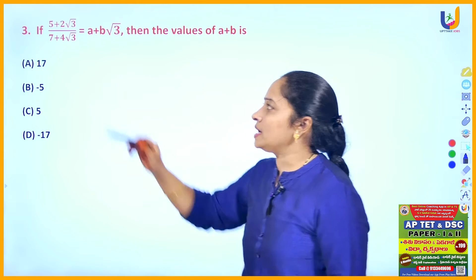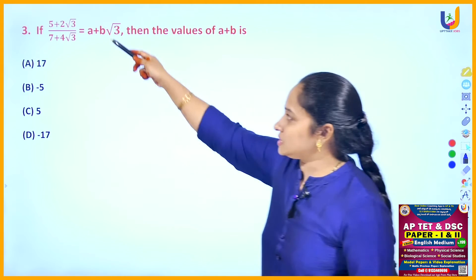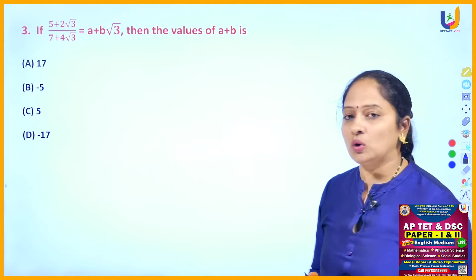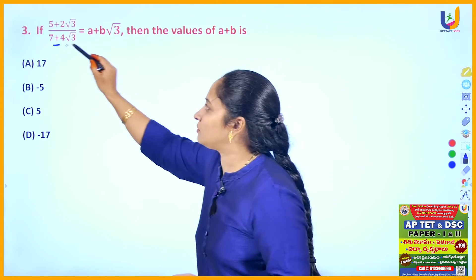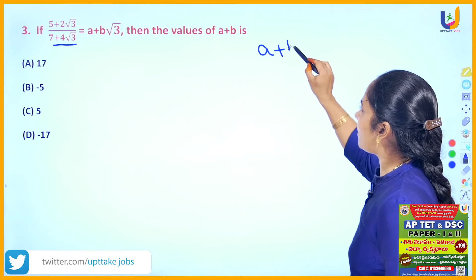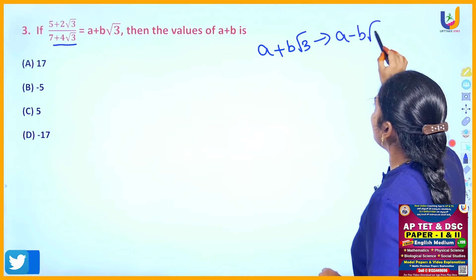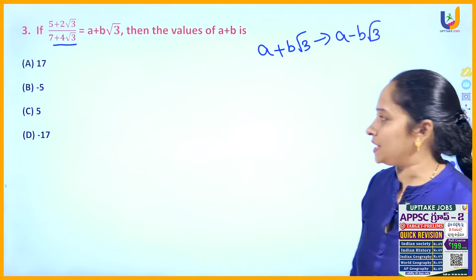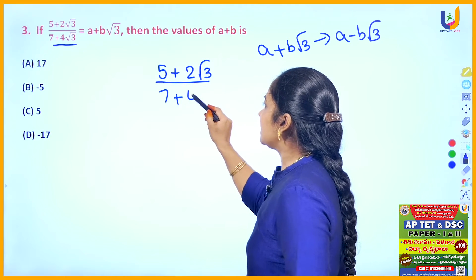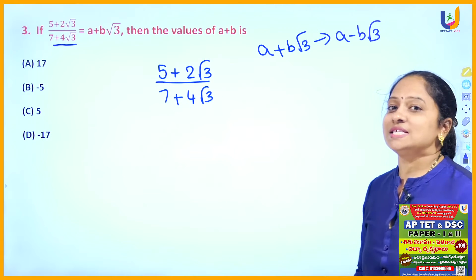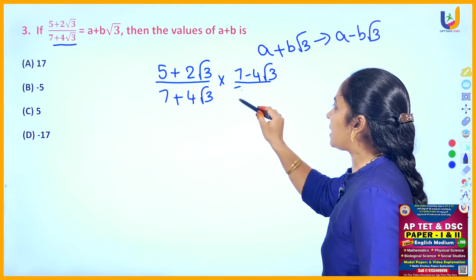The next question: if (5 + 2√3) / (7 + 4√3) equals a + b√3, find the value of a + b. These numbers can be rationalized to get the values of a and b. The rationalizing factor means you rationalize the denominator. If a number is in the form a + b√3, its rationalizing factor becomes a − b√3 — just take the opposite sign. Here the denominator is 7 + 4√3, so multiply both numerator and denominator by 7 − 4√3.